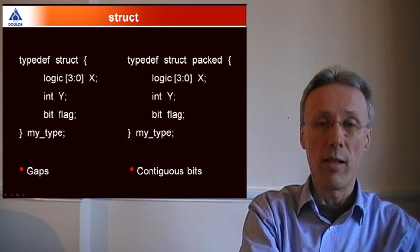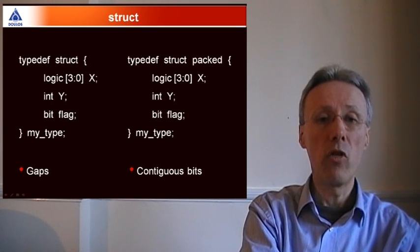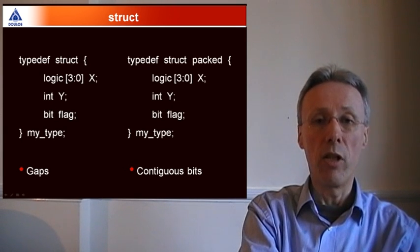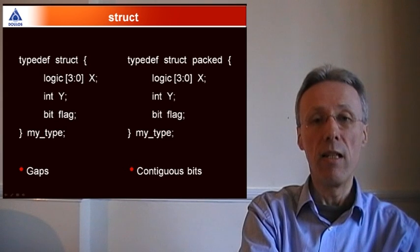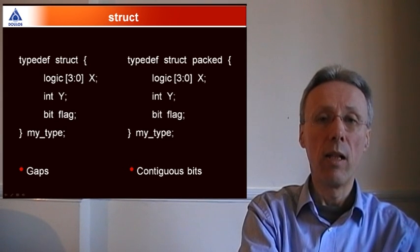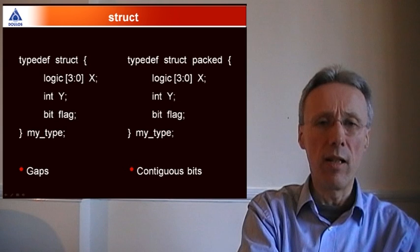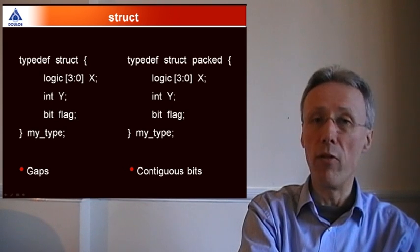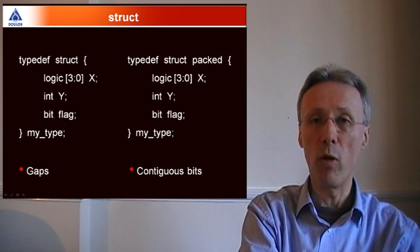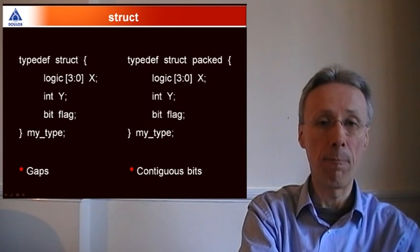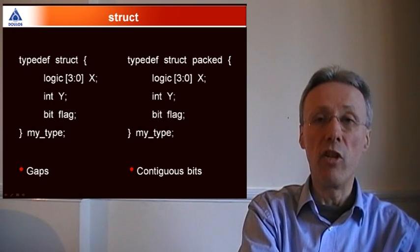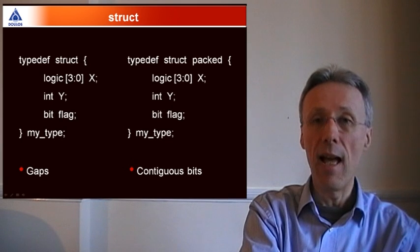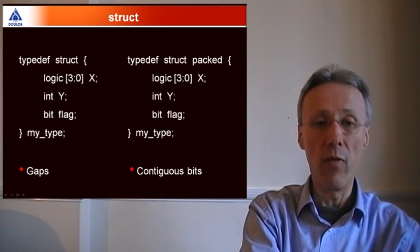The fields within the struct start off with a four-bit logic data type. Logic [3:0] X defines X as a four-bit vector. And logic is a four-value type, so each bit of X can take one of the four values 0, 1, X, or Z. So it actually requires eight bits to represent X. Y is a 32-bit signed integer, and flag is a single two-valued bit.